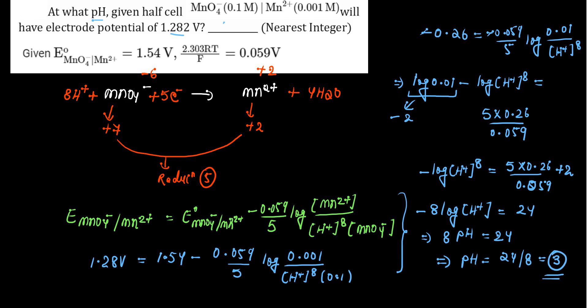So aise questions mein pehla step ho ga balanced equation likhna. Once we have written down the balanced equation, Nernst equation apply karna hai and accordingly we have to solve. Ab jaise minus log H plus to the power 8 aya to log a to the power b ka formula laga ke 8 ko aamne aage le liya, minus 8 log H plus. And then we have to remember that minus log of H plus is pH, so simply waha peh 8 times of pH ho jayega. Calculation mein thoda time ja sakte and you have to do it very precisely because digits wrong karne pe waha pe answers incorrect ho jayega. So take care of that.